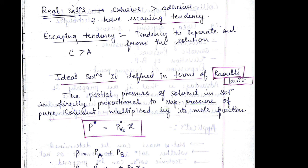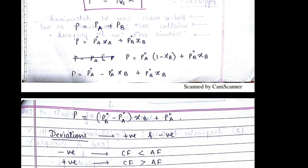So this is the formula: P is equal to P⁰ vs x. P is partial pressure, P⁰ vs is vapor pressure of pure solvent, and x is the mole fraction. This is the further derivation of Raoult's law.